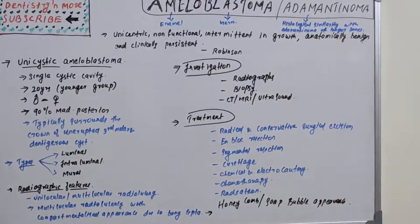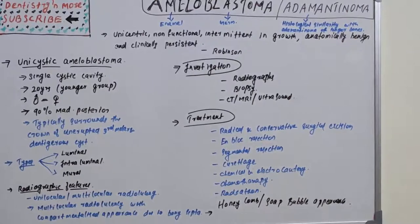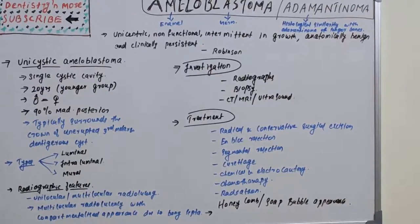Chemotherapy uses platinum agents — cyclophosphamide, cisplatin, vinblastine. Electrocautery is another method, and radiation therapy is also available.